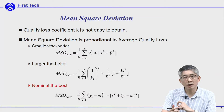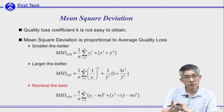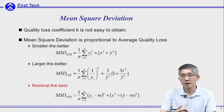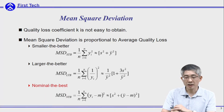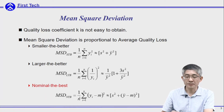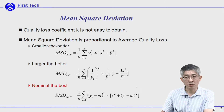The quality loss coefficient k is not always easy to obtain, and k is simply a constant. Therefore, in the quality measures we can neglect k and just look at the mean squared deviation part of the average quality loss. The mean squared deviation for smaller-the-better, larger-the-better, and nominal-the-best will be listed here.